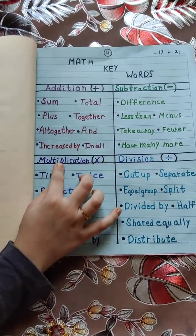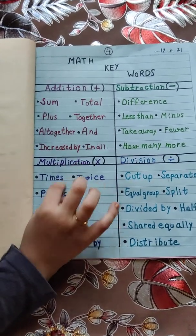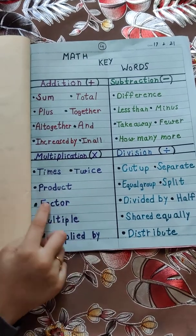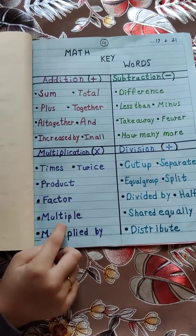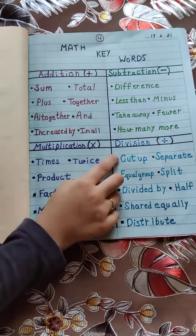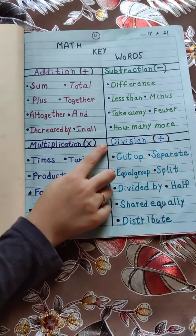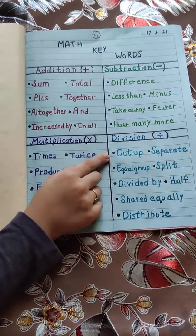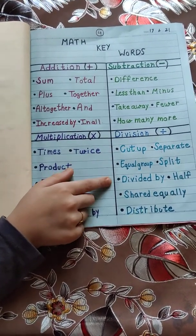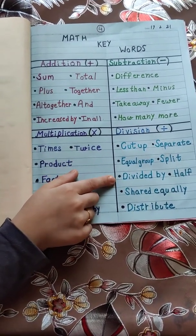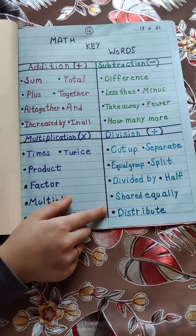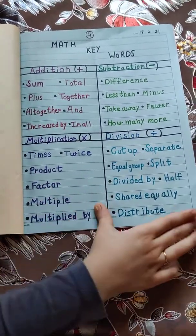Multiplication keywords are: times, twice, product, factor, multiple, and multiplied by. Division keywords are: cut up, separate, equal, group, split, divided by, half, share, equally, and distribute.